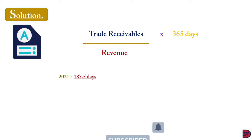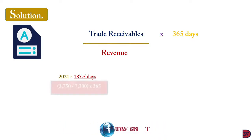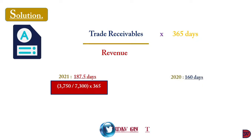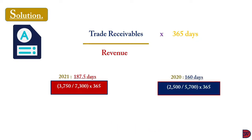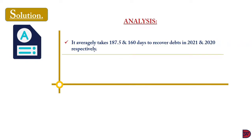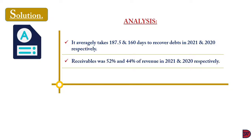For 2021, the receivable days were 187.5 days, calculated by dividing trade receivables of $3,750 by revenue of $7,300 and multiplying by 365. For 2020, it was 160 days, calculated by dividing trade receivables of $2,500 by revenue of $5,700 and multiplying by 365. The position has worsened. On average, it takes 187.5 days to recover money from receivables in 2021 compared to 160 days in 2020. A careful analysis shows that receivables in 2021 were 52% of revenue, compared to 44% in 2020.